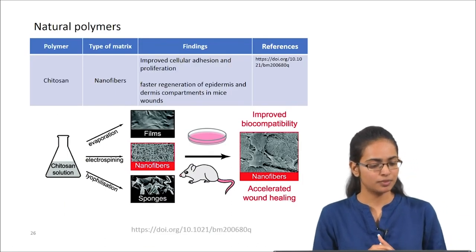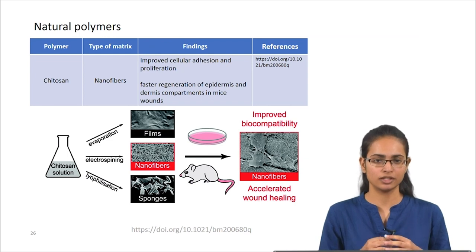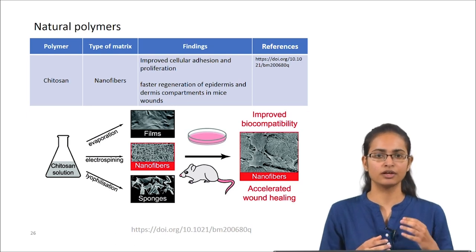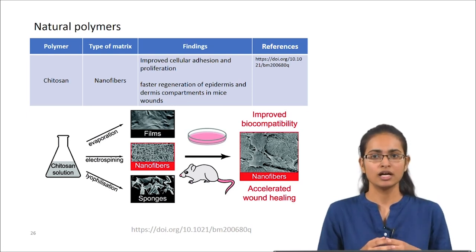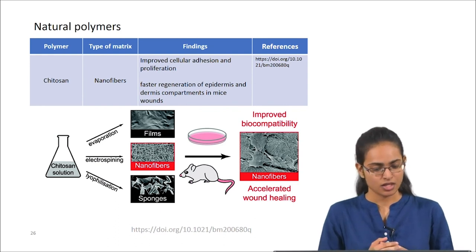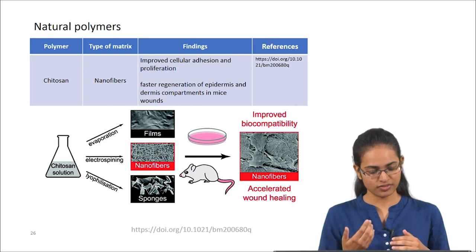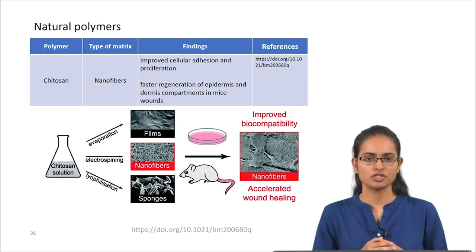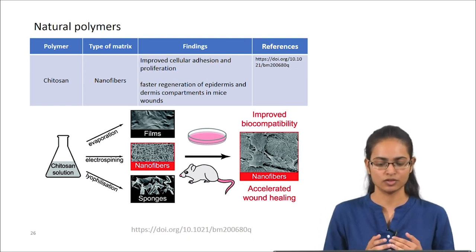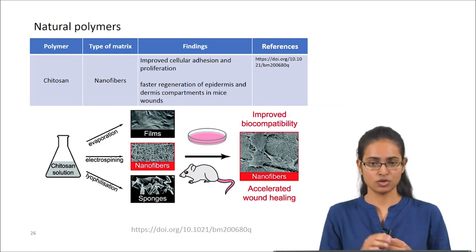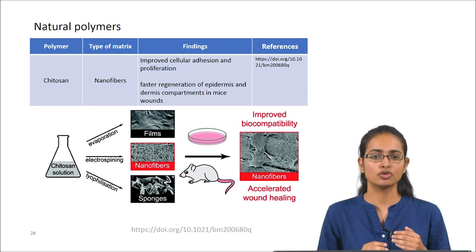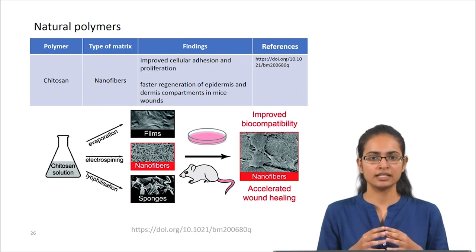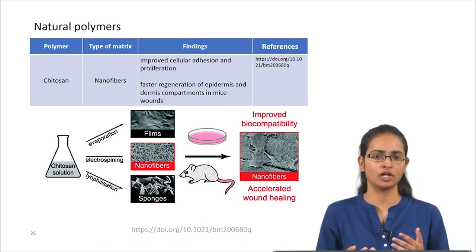Chitosan is a very popular material used for skin tissue engineering, obtained from chitin found in fungal cell walls and the exoskeleton of insects. Chitosan can be processed into different types of matrices such as films, nanofibers, and sponges. An in vivo study has shown it is highly biocompatible and has been shown to accelerate wound healing, as well as improve cellular adhesion and proliferation.